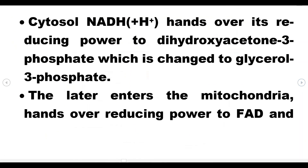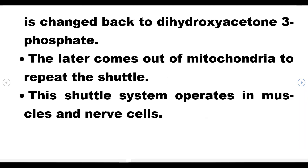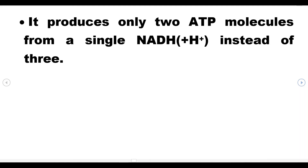Cytosol NADH plus H plus hands over its reducing power to dihydroxyacetone 3-phosphate, which is changed into glycerol-3-phosphate. The latter enters the mitochondria, hands over reducing power to FAD, and is changed back to dihydroxyacetone 3-phosphate, which then comes out of mitochondria to repeat the shuttle. This shuttle system operates in muscles and nerve cells. It produces only 2 ATP molecules from a single NADH plus H plus, instead of 3.